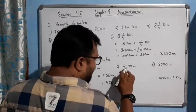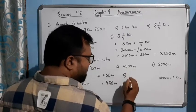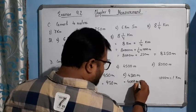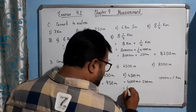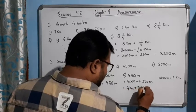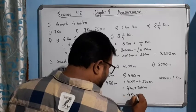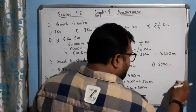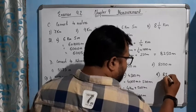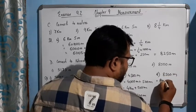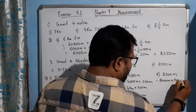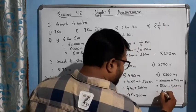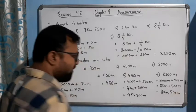For 4500 meters: 4000 meters plus 500 meters gives 4 kilometers and 500 meters. Similarly, 8500 meters means 8000 meters plus 500 meters, which equals 8 kilometers 500 meters.